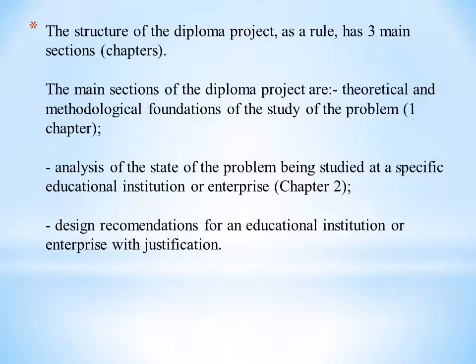The structure of the Diploma Project has a rule that includes three main chapters. The main sections are: theoretical and methodological foundations of the study on the problem; analysis of the state of the problem being studied at the specific educational institution or enterprise; and design and recommendations for an educational institution or enterprise with justification.